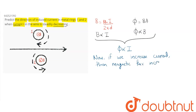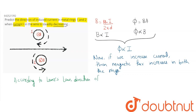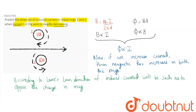Flux increases in both the rings. Now, according to Lenz's law, the direction of induced current will be such as to oppose the change in magnetic flux.